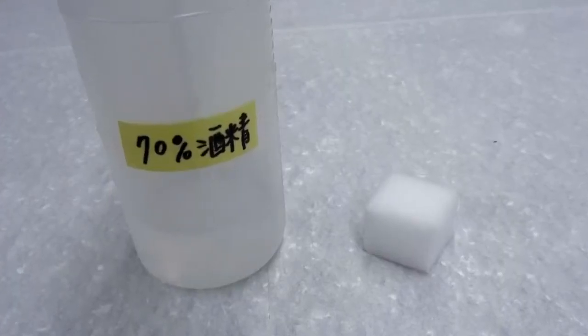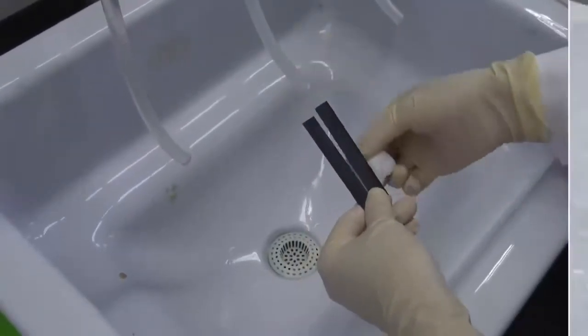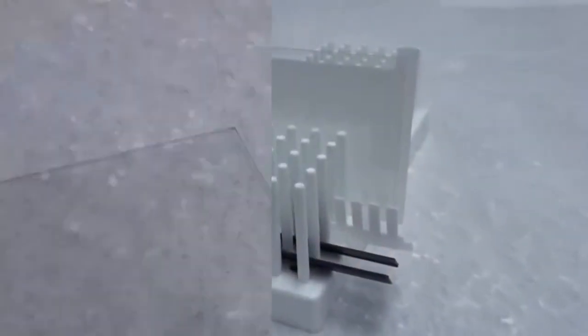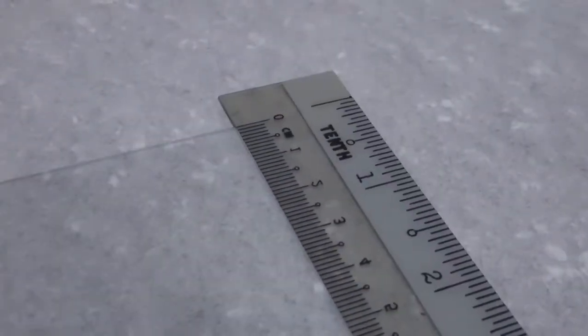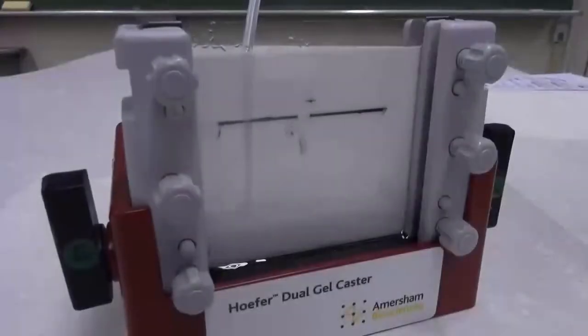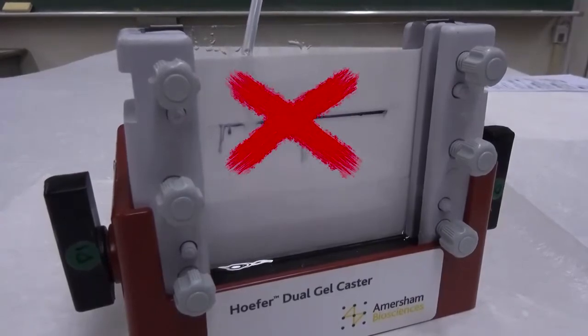Clean one glass plate, one ceramic plate, and two spacers with sponge and ethanol. Wipe with Kimwipes and allow them to dry completely on a rack. Mark a straight line on the glass plate about 3 cm from its upper edge. This line can be used as a reference for the level of separating gel. Make sure this side is facing outward. Otherwise, the mark will be washed off by the gel solution.